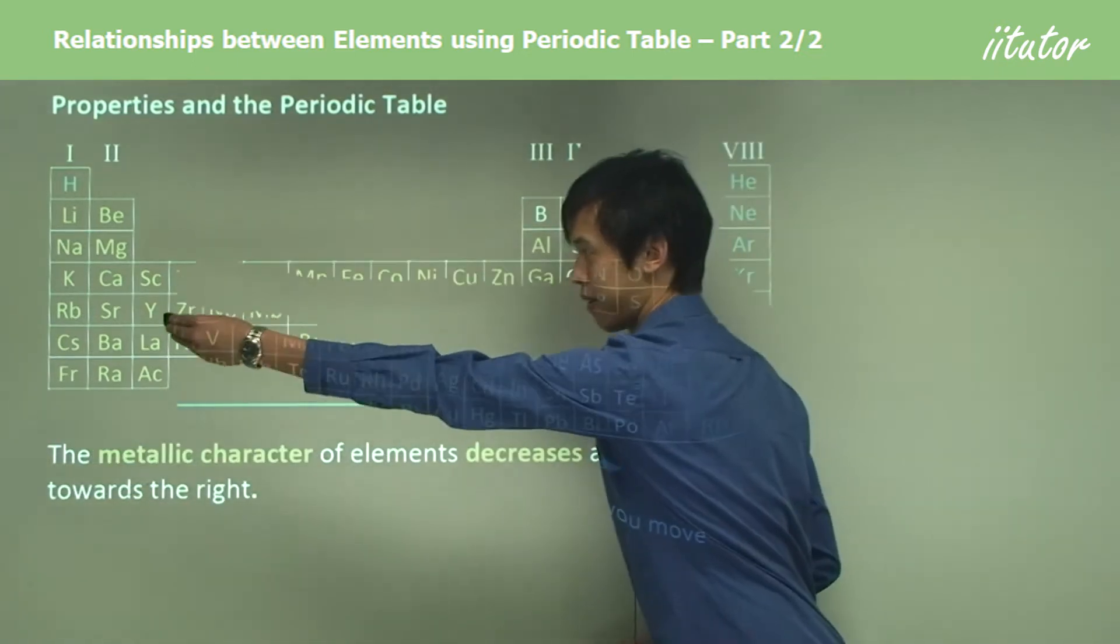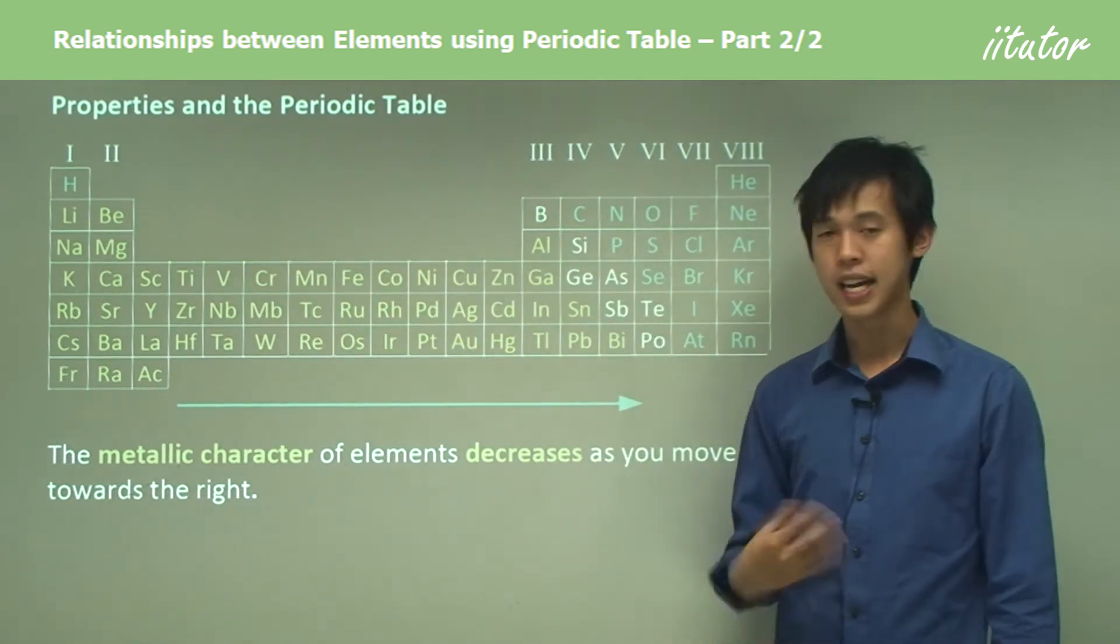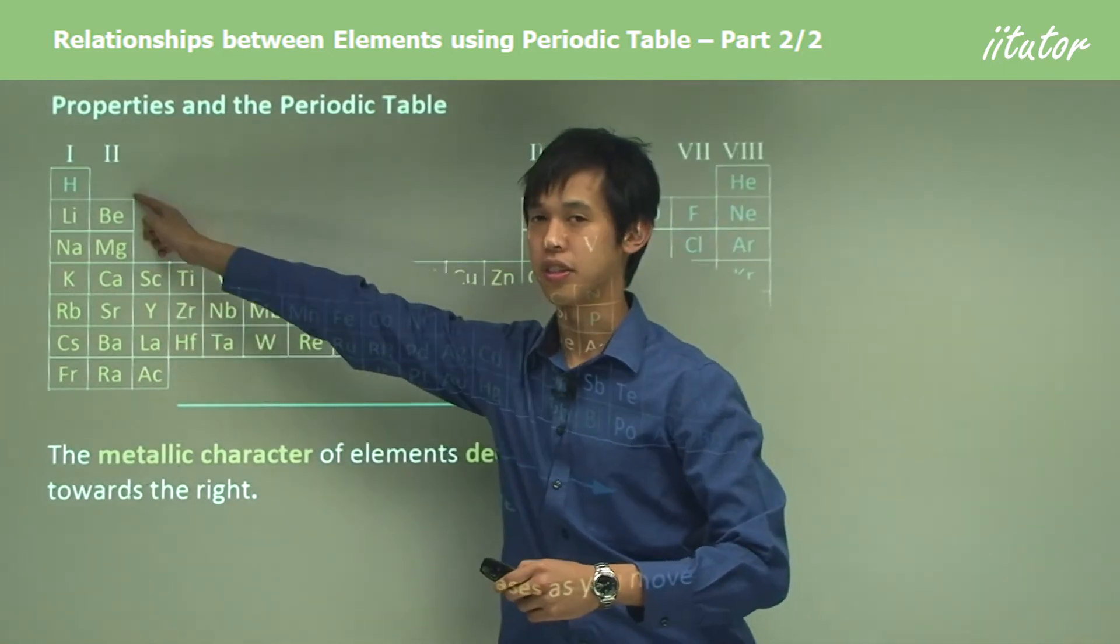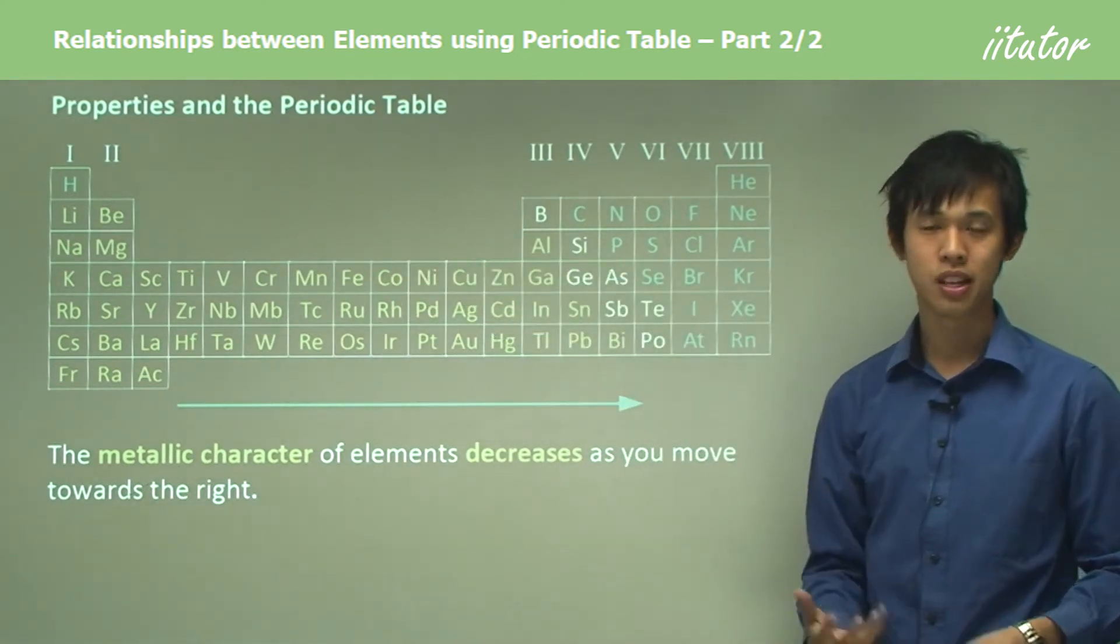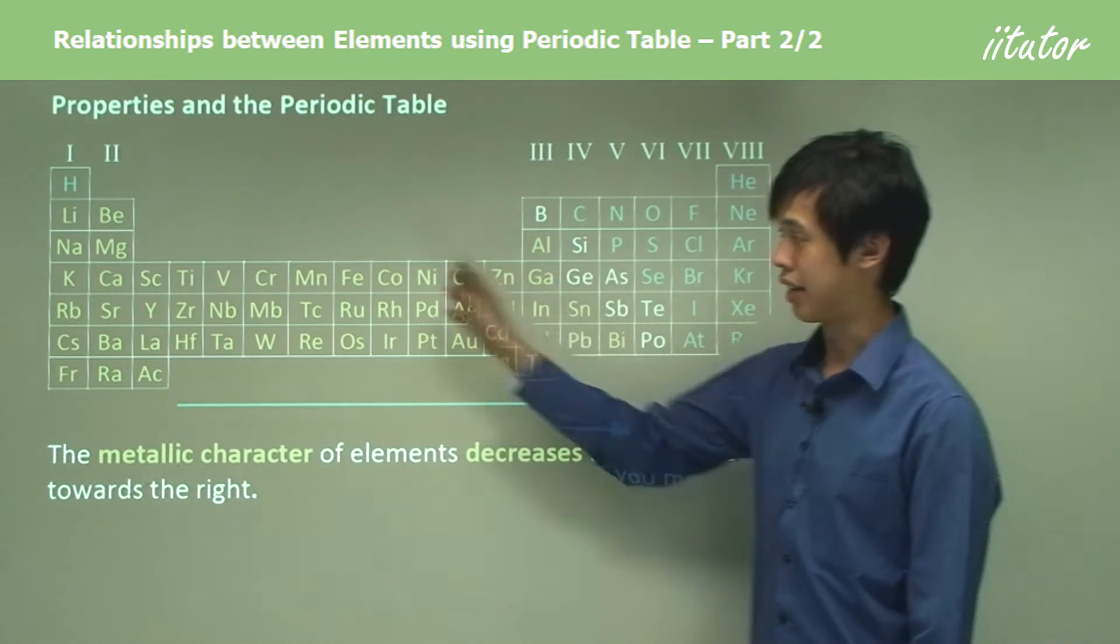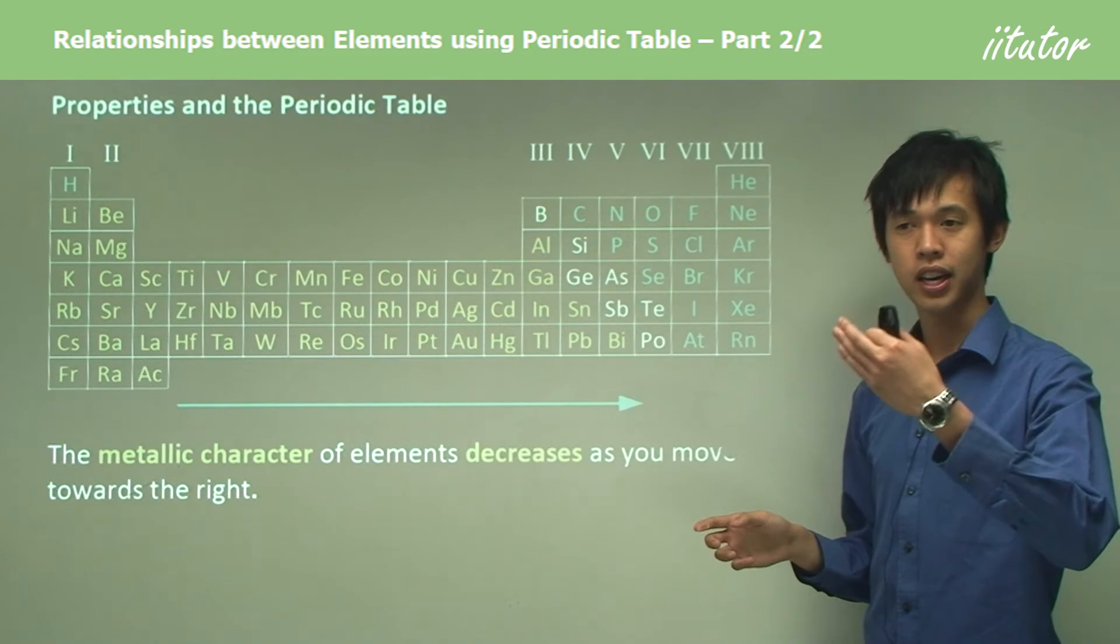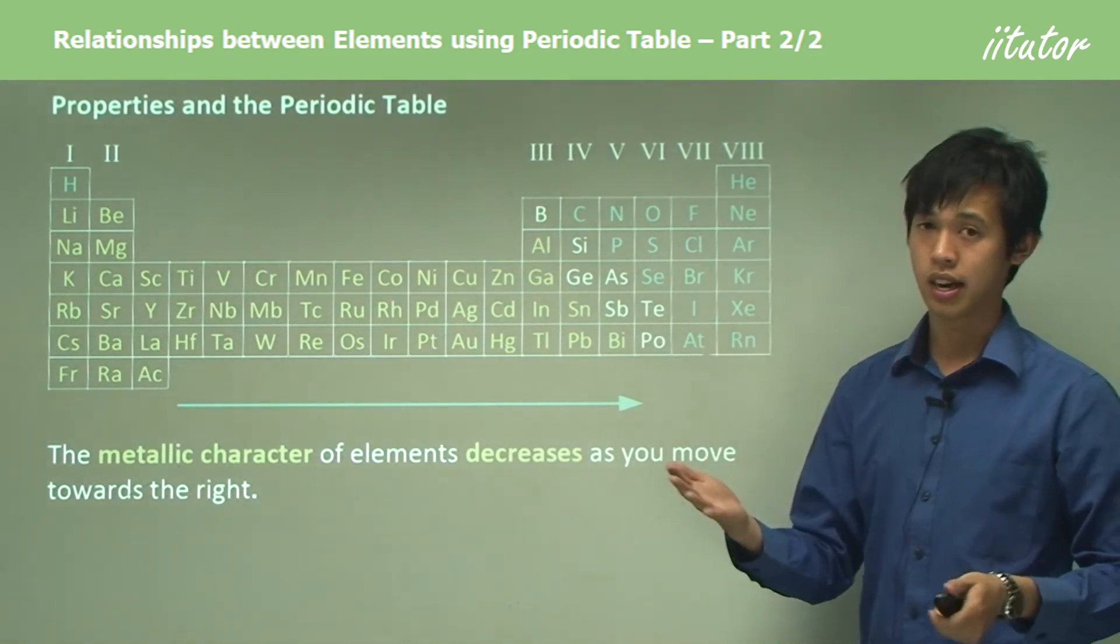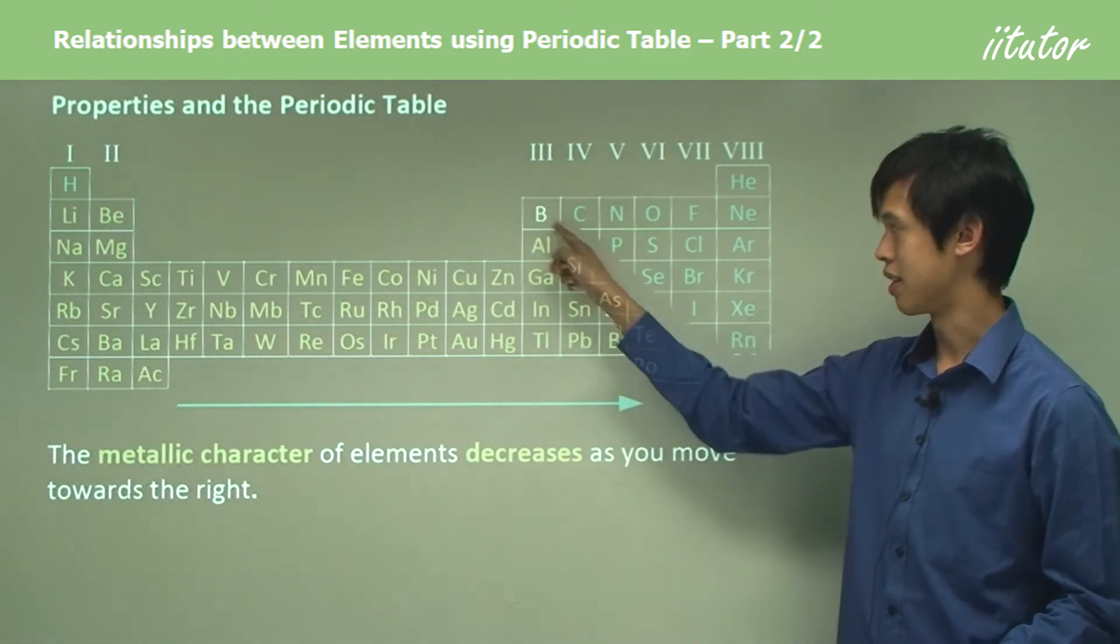As we go from left to right, this blue arrow pointing at the non-metals, the metallic character of elements decreases. When we go from the left-hand side, with the exception of hydrogen, we notice that as we go this way, elements start to lose their metallic character. They look less like metals. Elements on this side are much less like metals than these guys, and that makes sense because this side is non-metal.